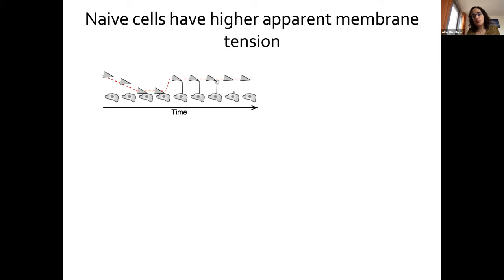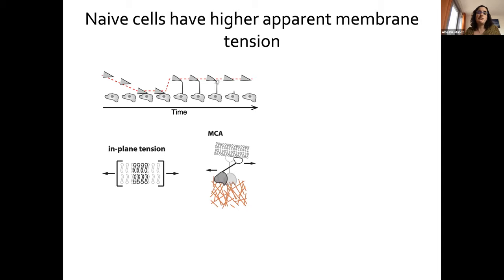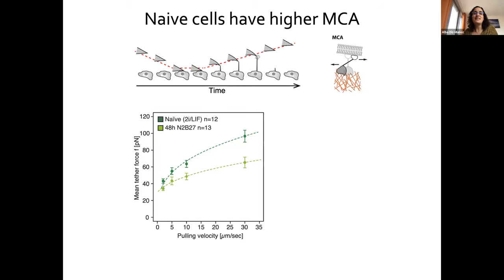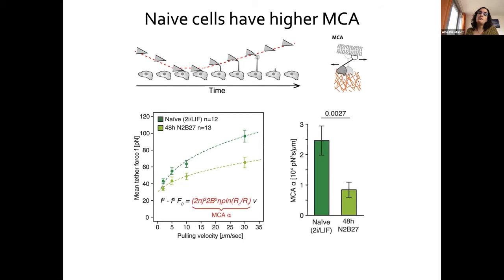Pulling a tether gives us a combination of in-plane membrane tension and membrane-to-cortex attachment. We could see that naive cells have a higher apparent membrane tension than primed cells — very puzzling coming from a migration field where spreading increases apparent membrane tension. So we wondered what exactly underlies this reduction. We performed dynamic tether pulling experiments where we pull a tether without letting it equilibrate, keeping pulling until the tether breaks, at different speeds, and fit a mathematical model to get a specific measurement of the membrane-to-cortex attachment parameter. Naive cells have a much higher membrane-to-cortex attachment than their primed counterparts.